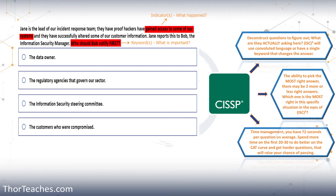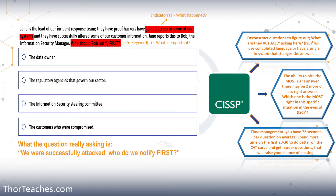If we look at this question: Jane is the lead of our incident response team. They have proof hackers have gained access to some of our systems and have successfully altered some of our customer information. Jane reports this to Bob, the IT security manager. Who should Bob notify first? The fact that Jane is the lead doesn't really matter. That we have proof does. Really, the question is: we have been attacked, they have compromised us — who do we notify first? That's it.